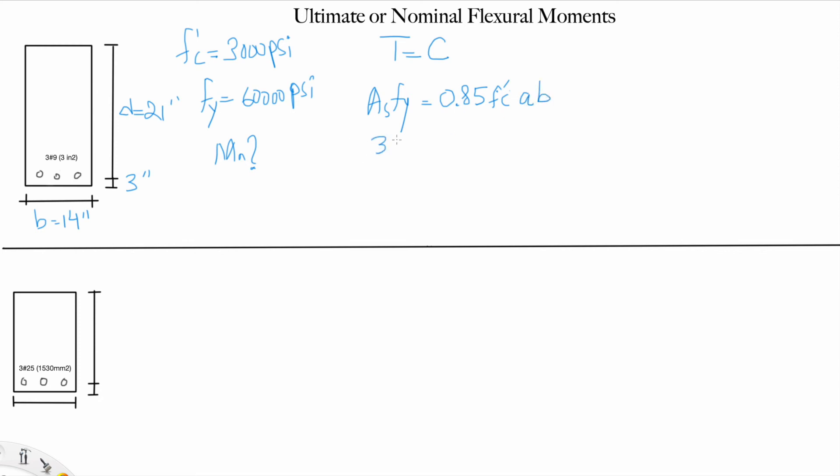As is 3 multiplied by 60,000, so 180k equals 0.85 multiplied by 3 multiplied by a. We don't know what's a but we know b. If you solve it, you will find a equals 5.04 inches. So now we know what is a and what is d.